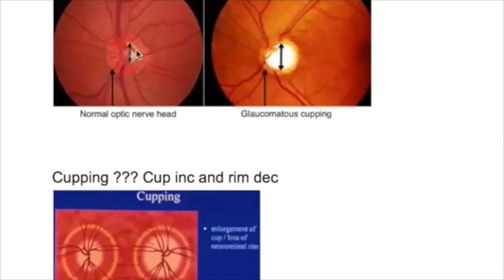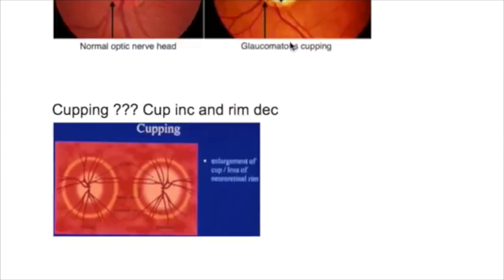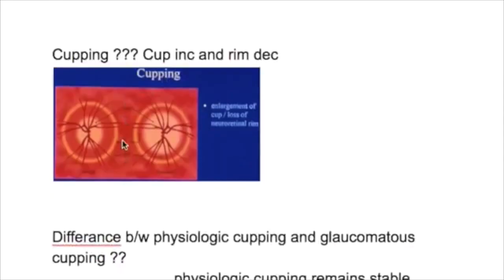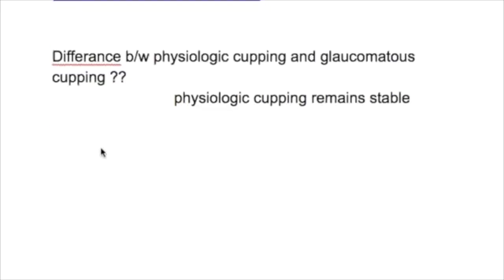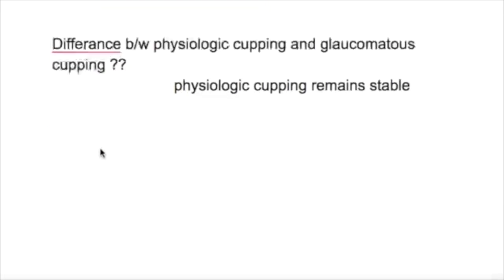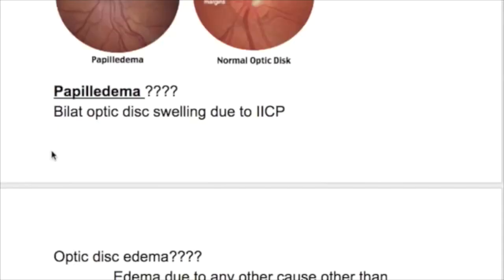This is the normal cup here. In glaucoma it increases, and the neuroretinal tissue — the rim — is decreased. This is known as optic disc cupping. Physiologic cupping remains stable for a long period of time, which distinguishes it from glaucomatous cupping.